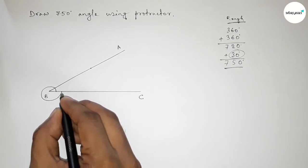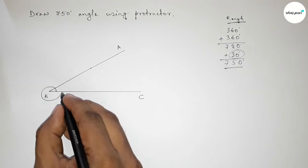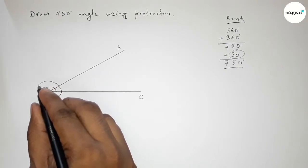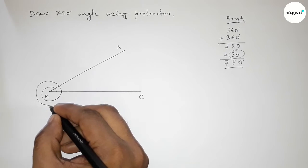Now this is 360 degrees, plus again drawing a 360-degree angle. So taking another round, this is 360-degree angle.